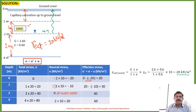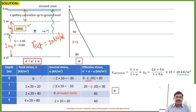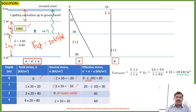Now we will draw the variation of total, neutral, and effective stress. For total stress: at ground level it is 0, at 1-meter depth 20, at 2-meter depth 40, at 4-meter depth 80 — all positive values. For neutral stress, there are negative values: −20 at ground level, −10 at 1-meter depth, 0 at water table, and +20 at 4-meter depth.